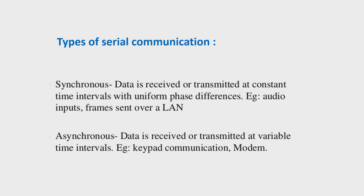Dear students, serial communication is further divided into synchronous communication and asynchronous communication. In synchronous communication, there is synchronization between the transmitter and receiver. The data is transmitted or received at constant time intervals with uniform phase differences, meaning transmitter and receiver must be in synchronization with each other. An example of synchronous communication is frames transmitted over LAN — Local Area Network — which is a network of computers.